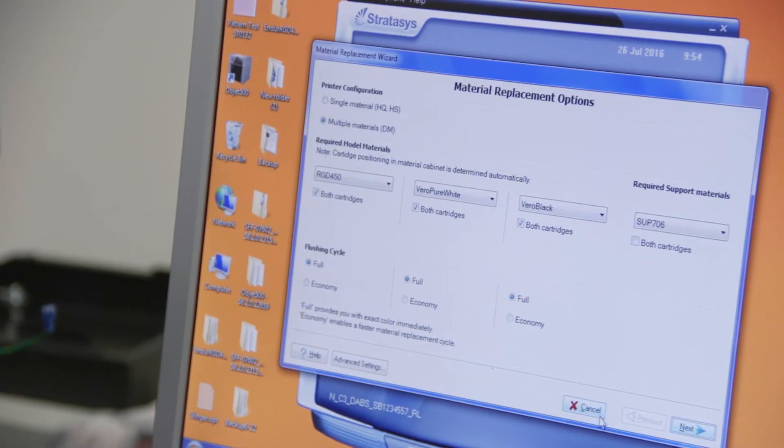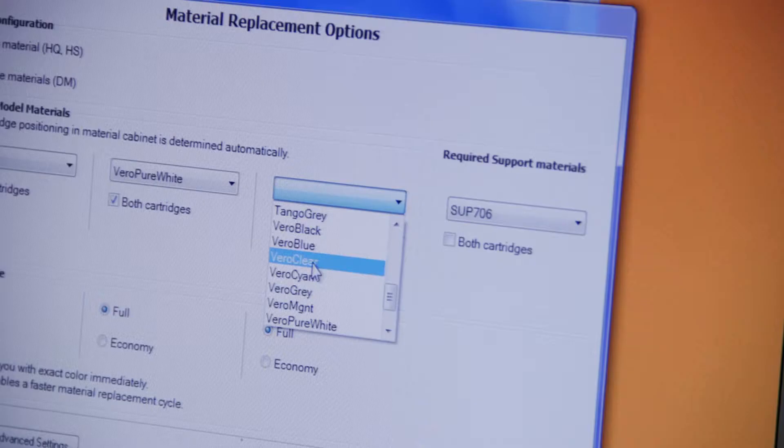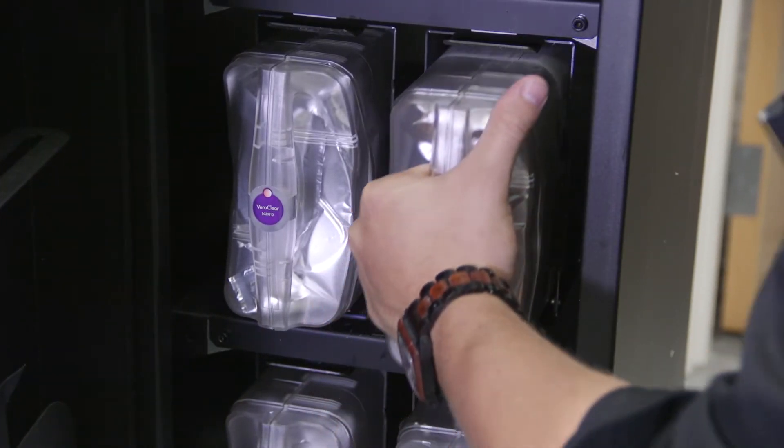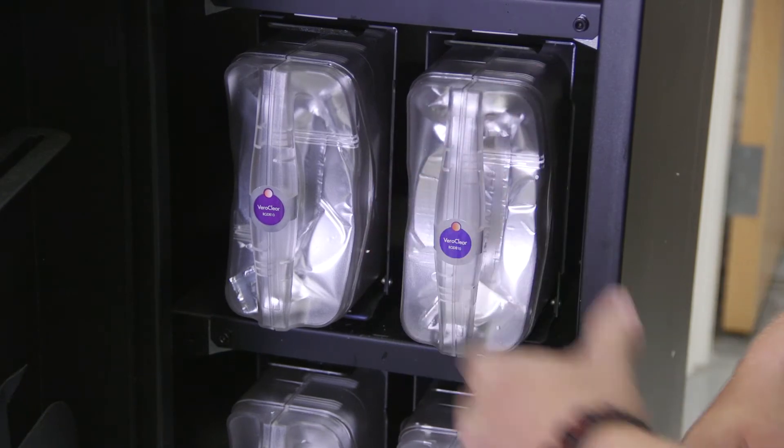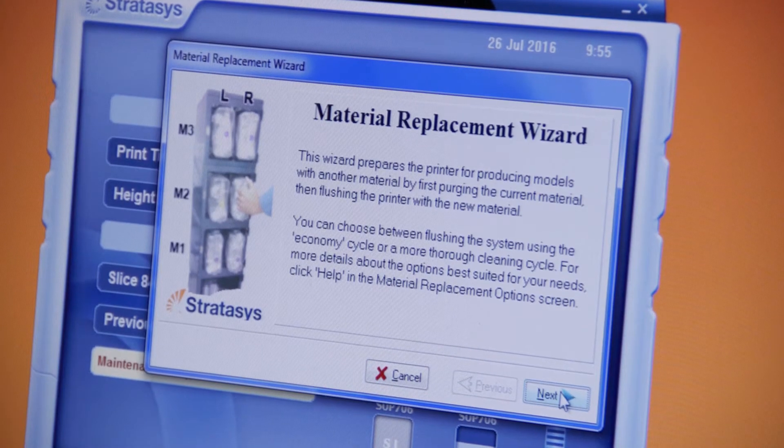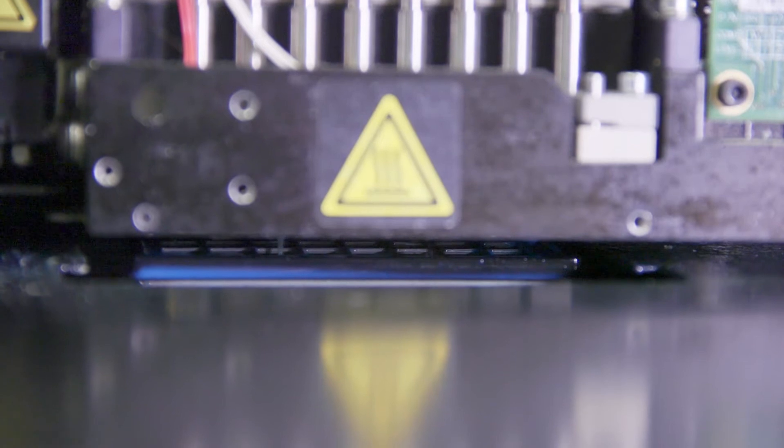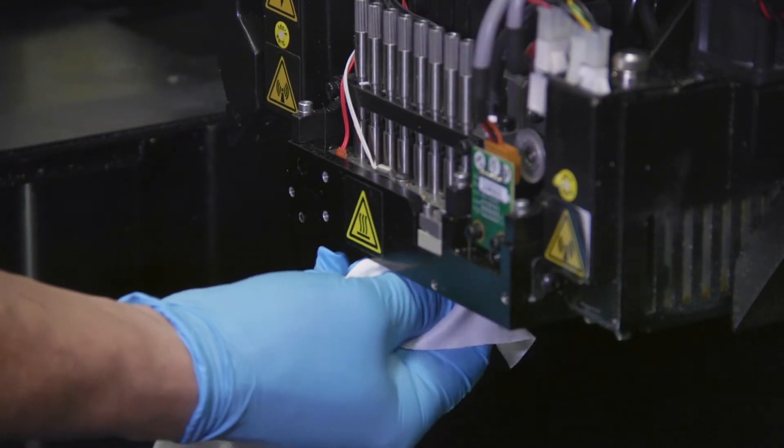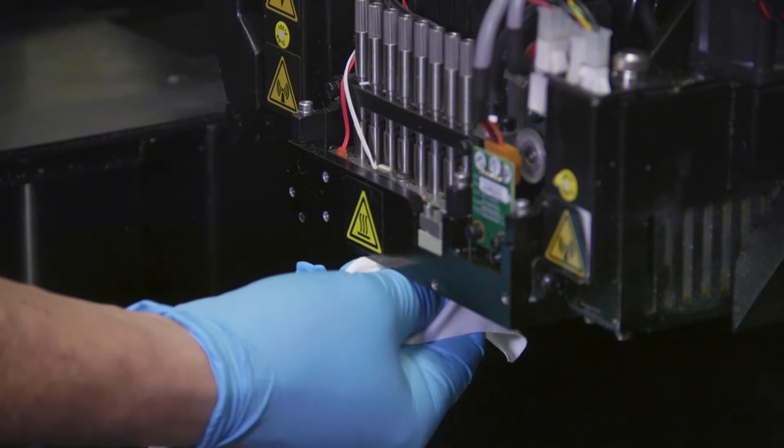Traces of previous materials affect the clarity of VeroClear parts. To prepare the printer for VeroClear printing, replace at least one of the currently installed cartridges with VeroClear. Then run the material replacement wizard and select the flushing option appropriate for your printer. Finally, clean the print heads, wiper, and roller waste collector thoroughly.